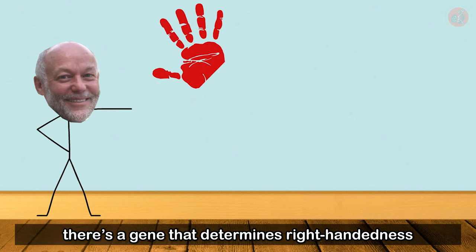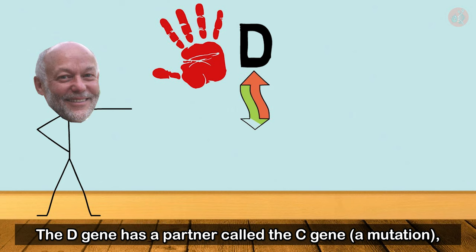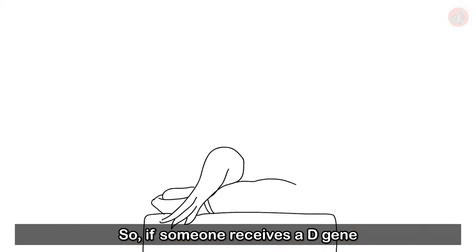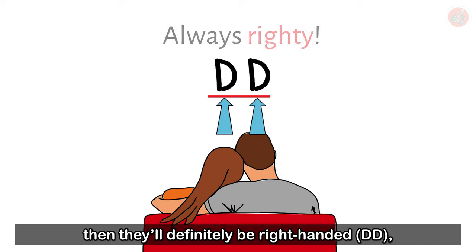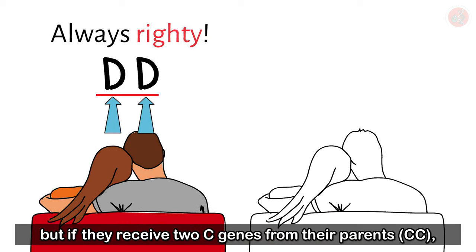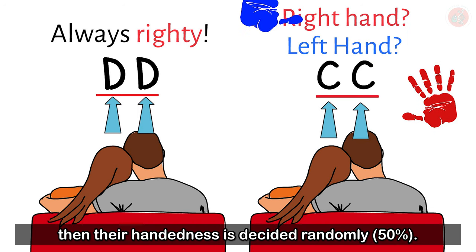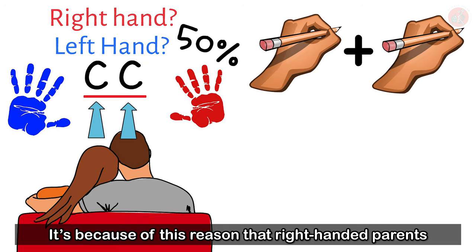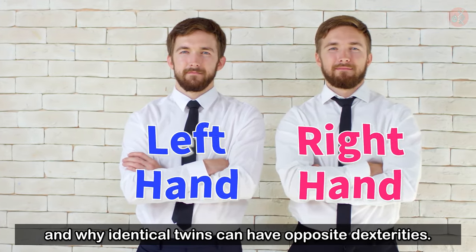His theory goes like this. There's a gene that determines right-handedness called the D gene. The D gene has a partner called the C gene, a mutation, which doesn't actually determine dexterity at all. So, if someone receives a D gene from their mother and father, then they'll definitely be right-handed. But if they receive two C genes from their parents, then their handedness is decided randomly. It's because of this reason that right-handed parents can have left-handed children, and why identical twins can have opposite dexterities.